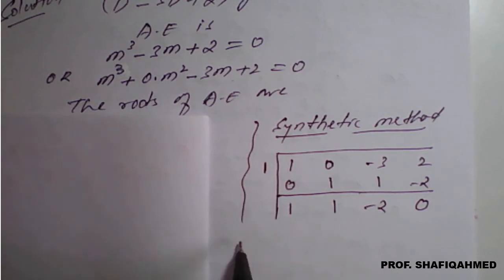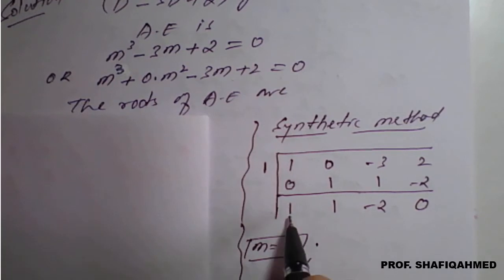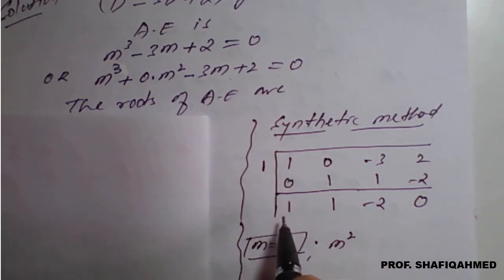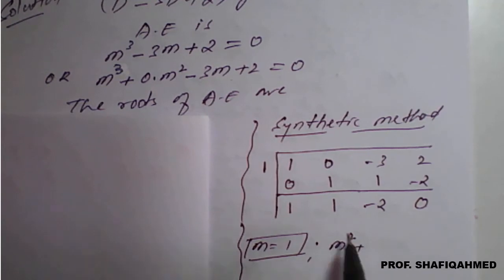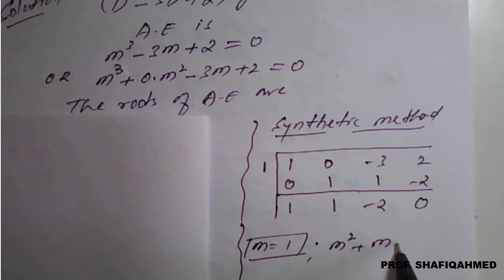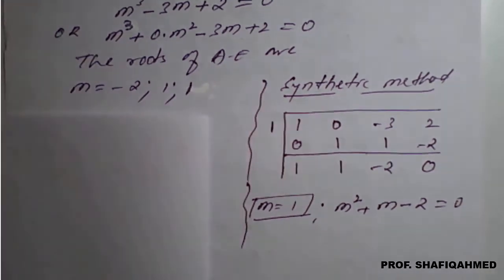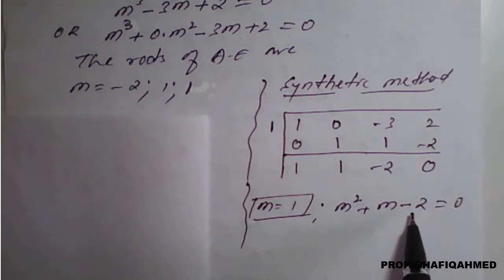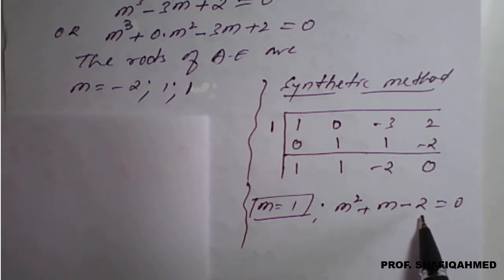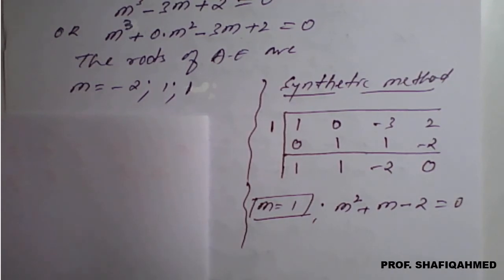The first root is m = 1, and the cubic equation is now converted to m² + m - 2 = 0. This quadratic is easy to factor using the normal method: we need two numbers that multiply to -2 and add to +1.